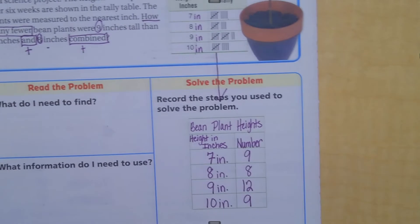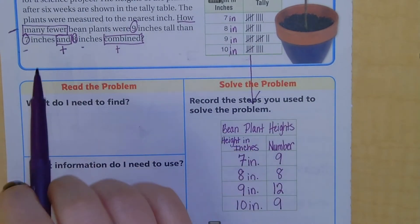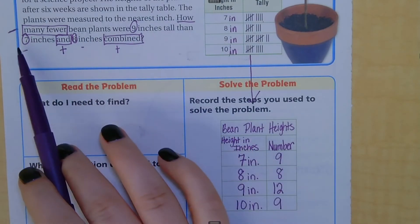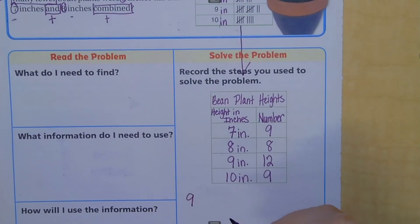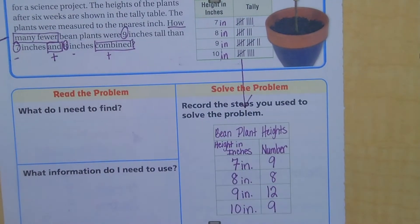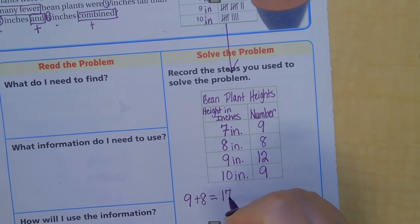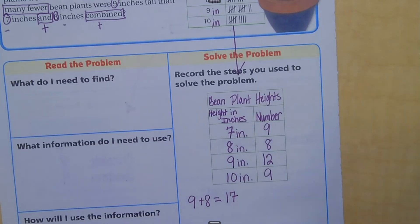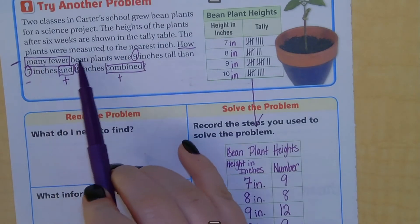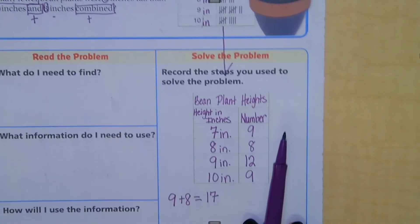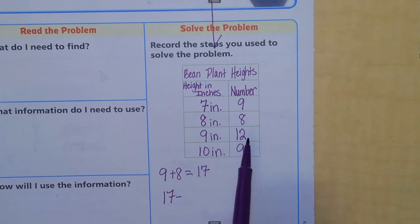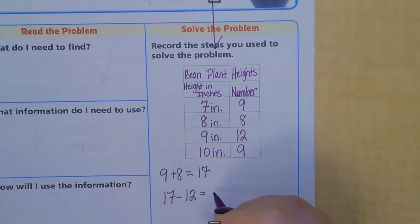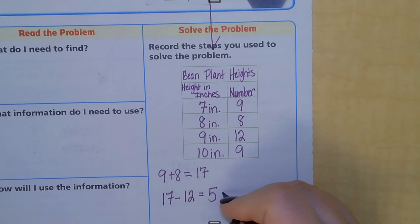Our question was: how many fewer bean plants were nine inches tall than seven and eight inches combined? First, combine seven and eight: there were nine plants at seven inches and eight plants at eight inches. Add those together — nine plus eight equals seventeen. So seventeen plants were seven or eight inches. Now subtract the number that were nine inches tall: there were twelve of them. Seventeen minus twelve equals five — five bean plants.